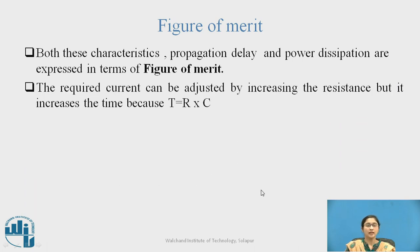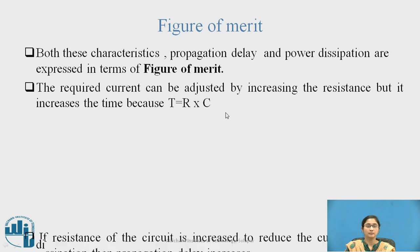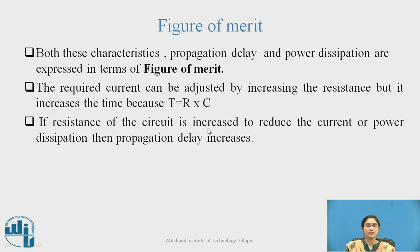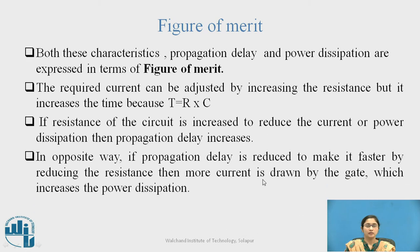The required current can be adjusted by increasing resistance, but it increases the time because T = R × C. If the resistance of the circuit is increased to reduce current or power dissipation, then the propagation delay T increases. Conversely, if propagation delay T is reduced to make it faster by reducing the resistance, then more current is drawn by the gate, which increases power dissipation.